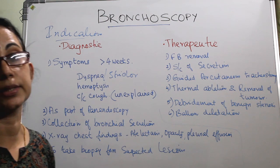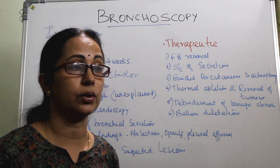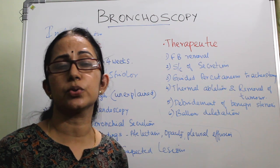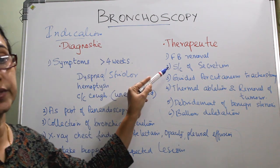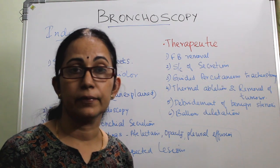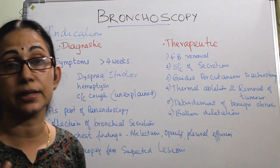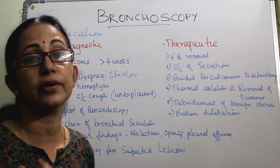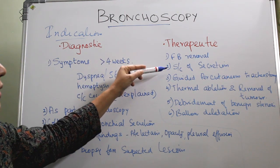For therapeutic indications: foreign body removal — if there is a foreign body in the bronchus, we can proceed with bronchoscopy, and rigid bronchoscopy is preferred if the foreign body is very large. Suction clearance of secretions is indicated if the patient has difficulty coughing, such as after a rib fracture, road traffic accident, or CVA — in such cases, bronchoscopy is used for suction clearance.